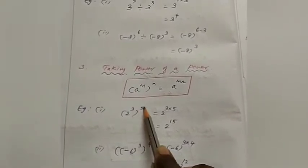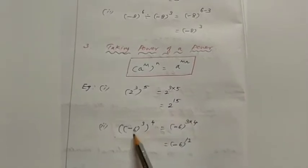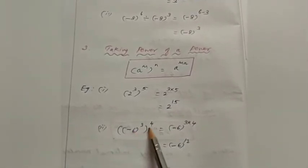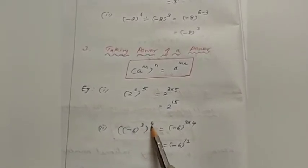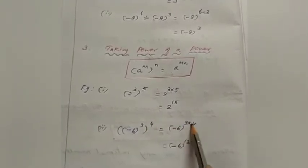For example, 2 power 3 whole power 5 — we multiply 3 into 5, giving 2 power 15 as the answer. The second example: minus 6 whole power 3, then whole power 4. We multiply 3 into 4, giving 3 fours are 12, so minus 6 whole power 12 is the answer.